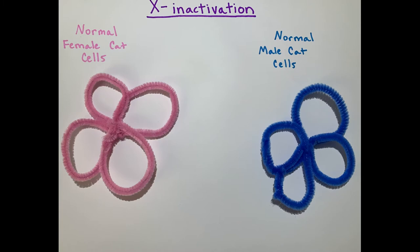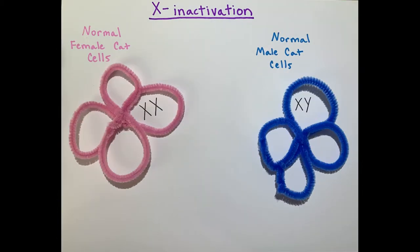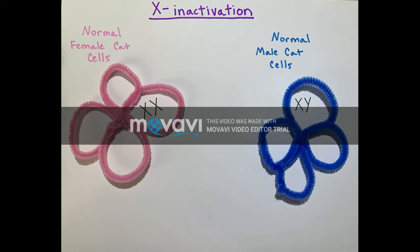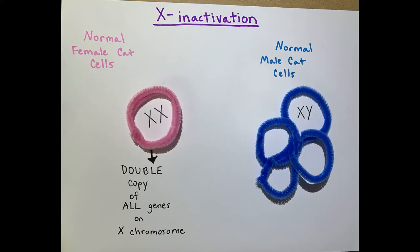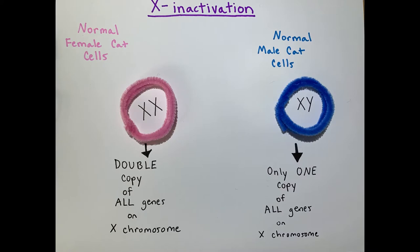Say you have a group of normal female cat cells and a group of normal male cat cells. Cats have an XY chromosome system, same as humans. Each normal female cat cell contains two X chromosomes, compared to each normal male cat cell containing only one X chromosome and a Y chromosome. For each female cell, there is a double copy of all genes on the X chromosome, whereas for each male cell, there is only one copy of all genes on the X chromosome.